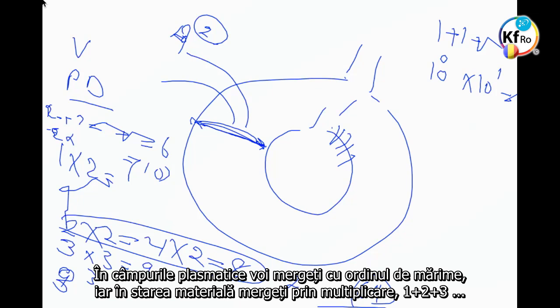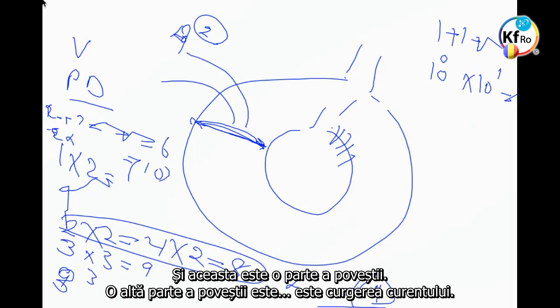In Plasmatic Field, you go by order of magnitude. In Matter-State, you go by multiplication of it - one plus two plus three, and you go on. And this is one part of the story.